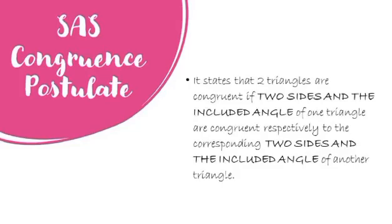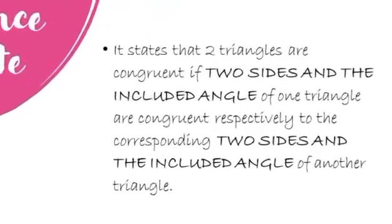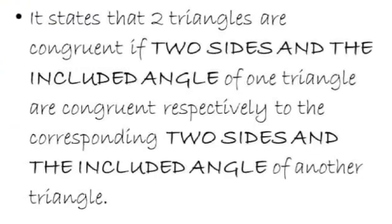The side-angle-side congruence postulate states that two triangles are congruent if two sides and the included angle of one triangle are congruent respectively to the corresponding two sides and the included angle of another triangle.